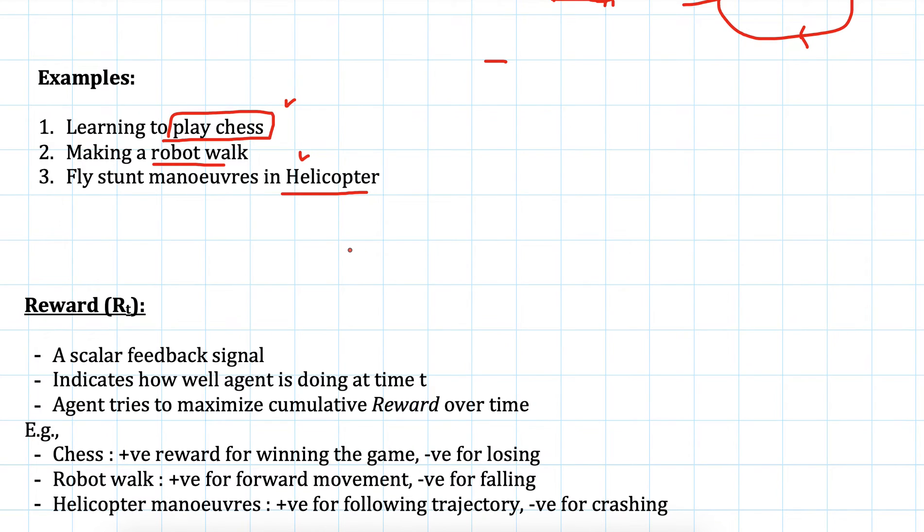Let's see how we can define rewards for these examples. Reward is a scalar feedback signal so you should have a scale where you can compare which reward is better. Like if you have reward one and reward two you would have some mechanism of comparing these rewards. It should be an indicator of how well the agent is doing at time t, so reward will indicate how good the action was. The main aim of the agent is to maximize those cumulative rewards over time.